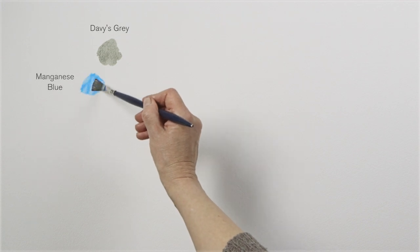This is Davy's Grey, a slate pigment developed by Winsor & Newton. We're not certain why it was named after Cotman student Henry Davy, but it's a beautiful transparent grey with a greenish tinge.